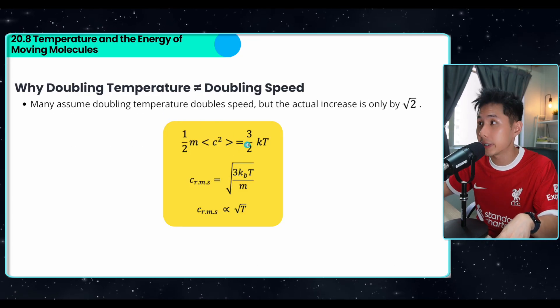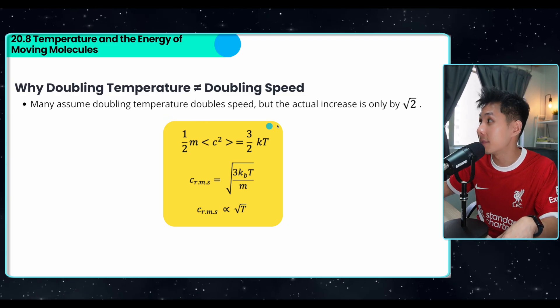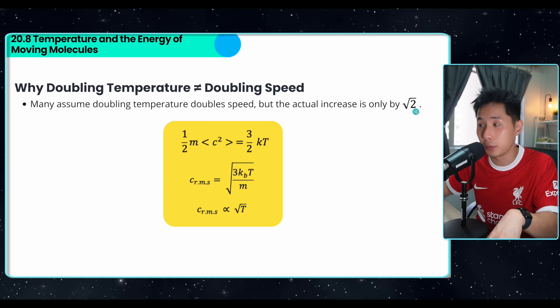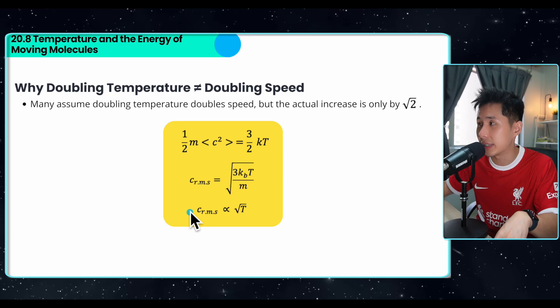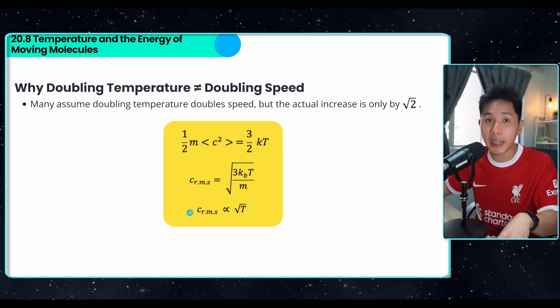Just want to show you the difference between the two here. Using the equation that we derived just now, you will see that doubling the temperature doesn't double speed. In fact, it only increased by square root of 2, which is proven by this equation here. So that's the end of this video. Thank you so much for watching. I shall see you in the next video. Goodbye.